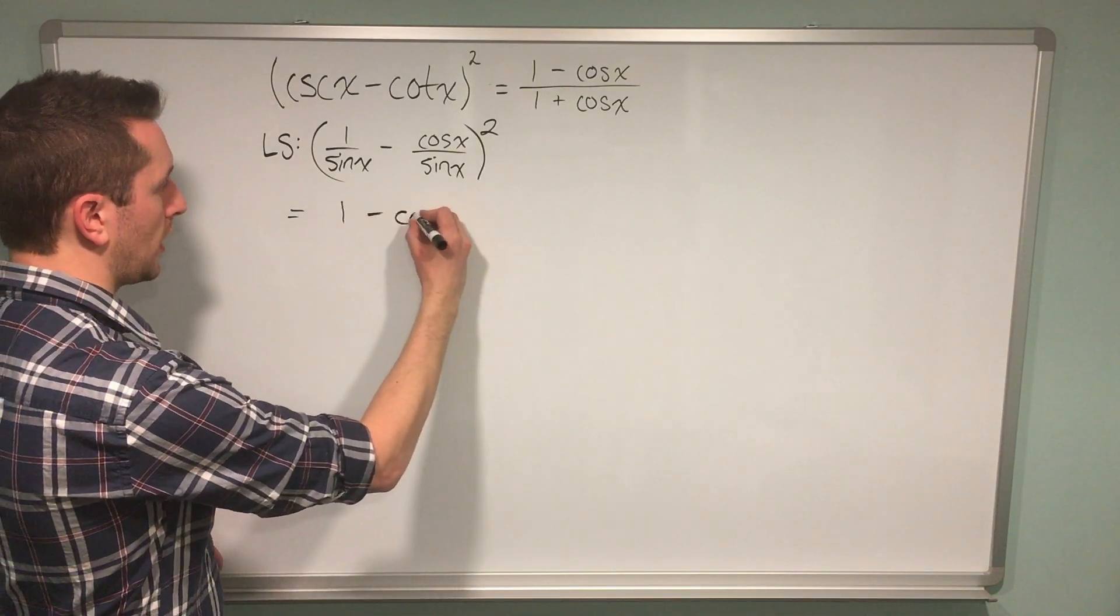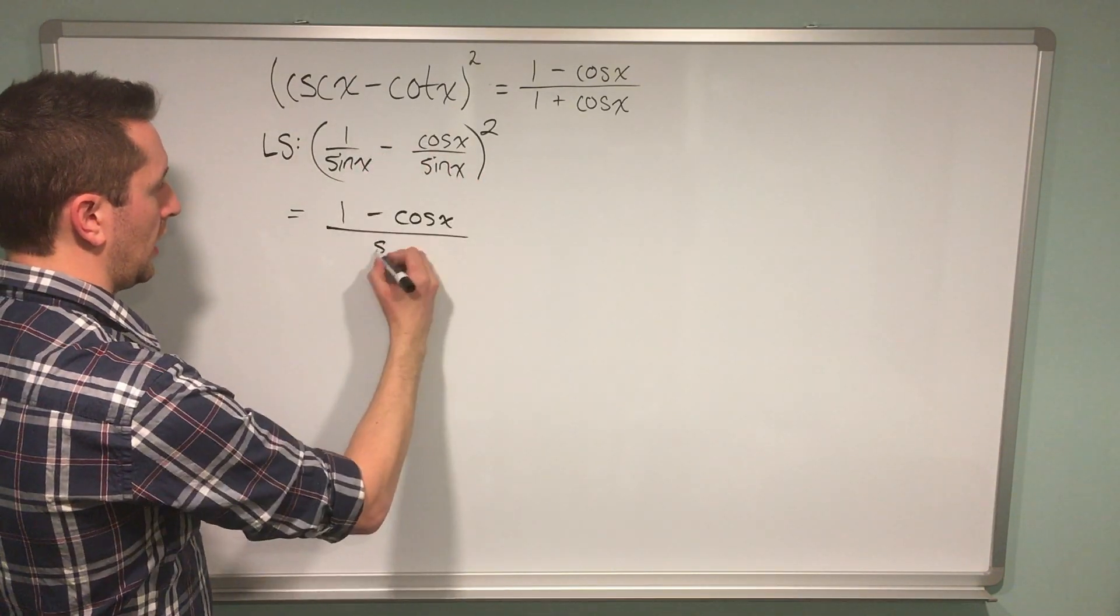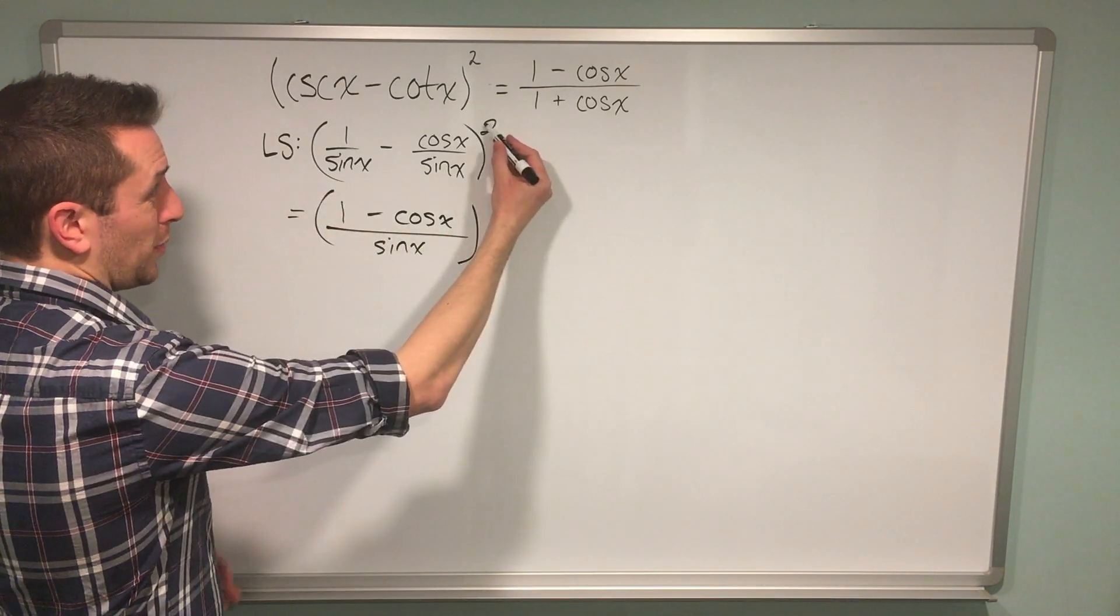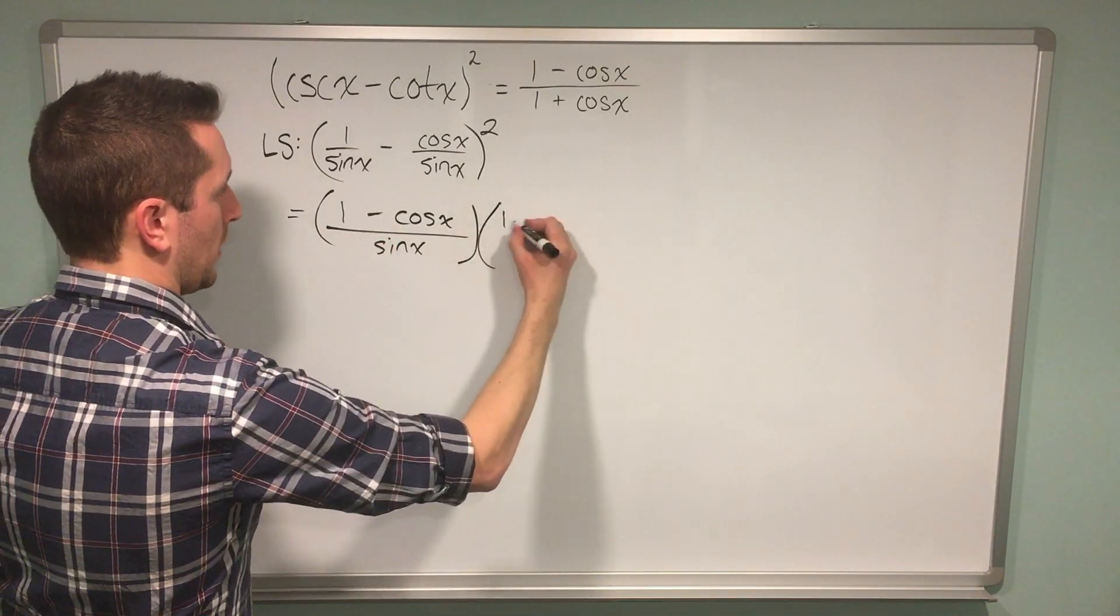I can keep the numerator the same, subtracting 1 minus cos x, and divide that by the common denominator of sine x. Because my original expression was squared, I can write out two of these being multiplied by each other.